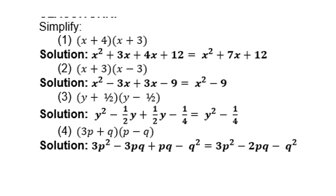Then the last one, (3p + q)(p - q). 3p times p is 3p². 3p times negative q is minus 3pq. Q times p is positive pq. And q times negative q is negative q². Then collect the two in the middle. And the answer is 3p² - 2pq - q².